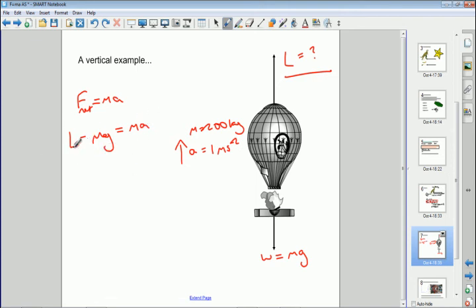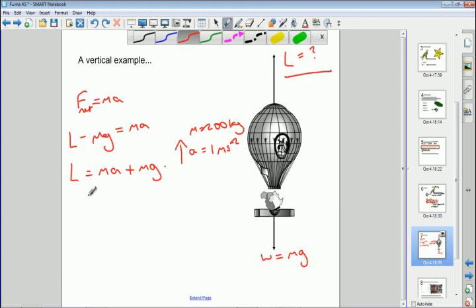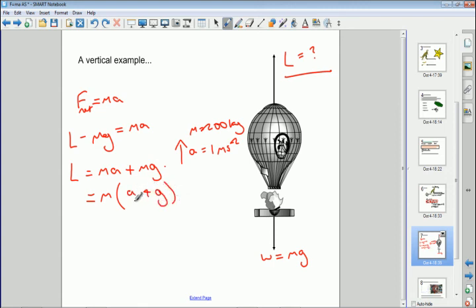So once we've done that, we can rearrange. We want to find L. So L is equal to MA plus mg, putting that to the other side. And if you want to, you can actually factorize this thing for M. So that gives you L is equal to M times A plus G. So what we're effectively doing is we're adding the accelerations together in this case.